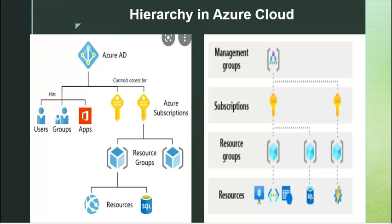We can create multiple management groups and put different projects under them. How subscriptions are defined under a management group varies from company to company based on their projects. They might define groups based on business units, or create one group for production, another for development, and another for UAT. The main purpose of a management group is just to organize subscriptions so that we can define policy at the management group level, and that policy will be inherited all the way down to the subscriptions and further down to the resource groups.